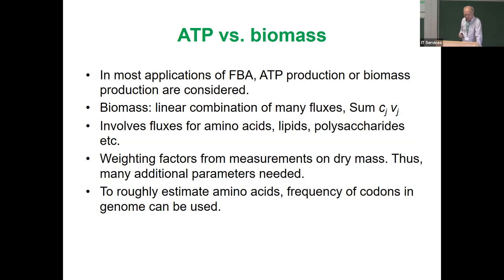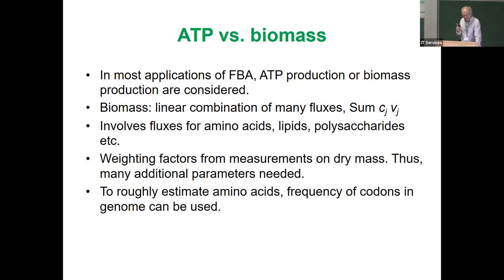The coefficients c_j for the biomass objective involve many parameters not always known. Often they are taken from measurements on dry mass — for example, dry mass of E. coli analyzed for its lipid and amino acid composition. For amino acids, one can use a rough estimate from the genome by looking at codon frequencies, though this implies all genes are expressed equally, which is of course not true.